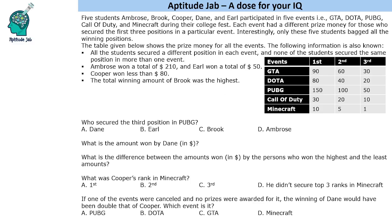The first, second, and third positions are amongst these 5 people: A, B, C, D, E. Some more information is given along with the table. The table gives the prize money for all the events, and it is given that all the students secured a different position in each event — no two people share the same slot.